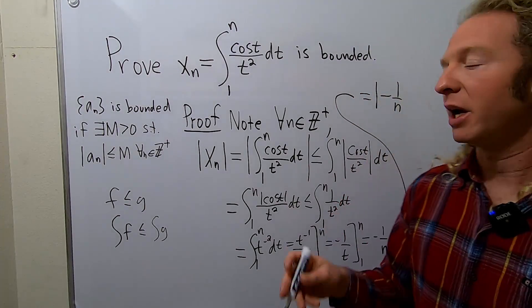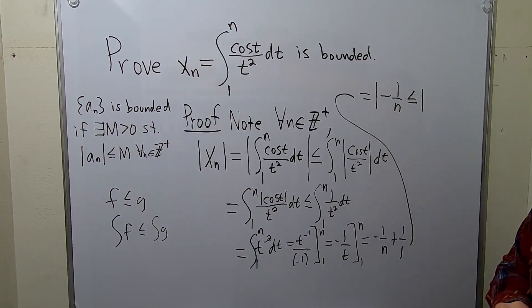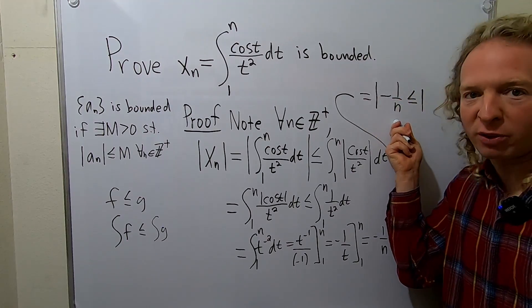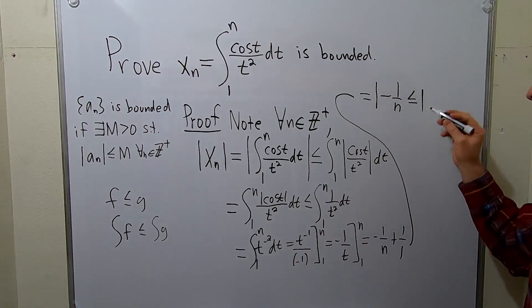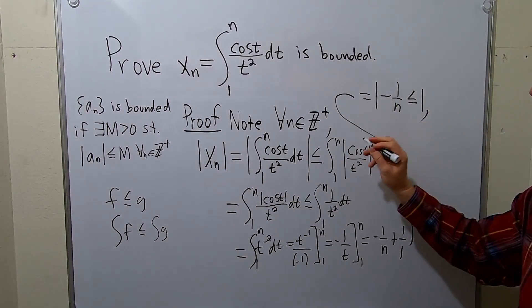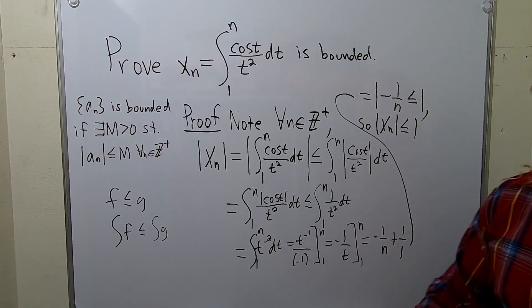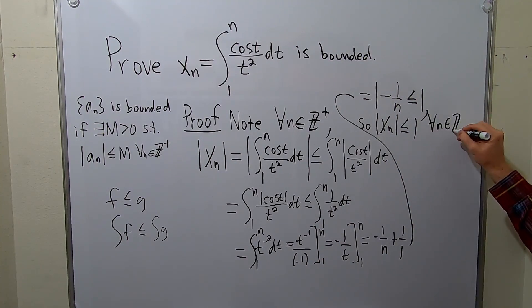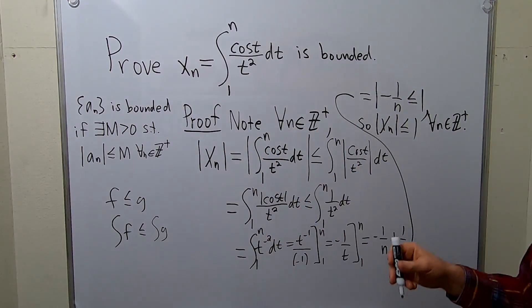And here's the punchline. 1 minus 1 over n is smaller than 1, right? Because you're taking 1 and you're subtracting a number smaller than 1. So it's always going to be smaller than 1. So we have that x sub n, the absolute value of x sub n is less than or equal to 1. And this is true for all positive integers n. So for all n in z plus. And this is precisely what it means for a sequence to be bounded.